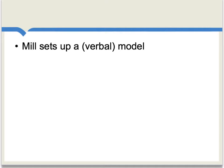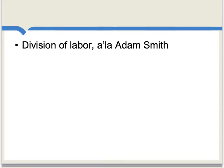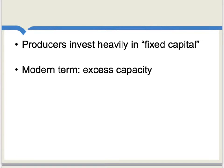Mill proceeds by setting up a verbal model to try to address all these questions. This verbal model starts with the notion of the division of labor, as had been emphasized and developed by Adam Smith. Division of labor is going to mean specialization, and producers are just doing a small number of things which they invest heavily in. According to Mill and also Smith, this means those producers will be investing heavily in fixed capital for particular modes of production.